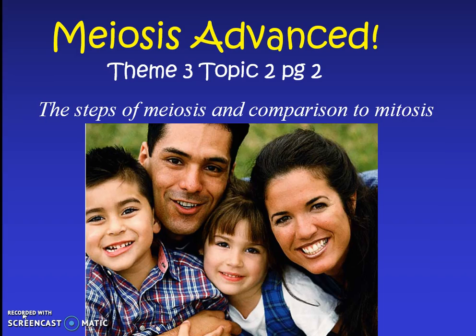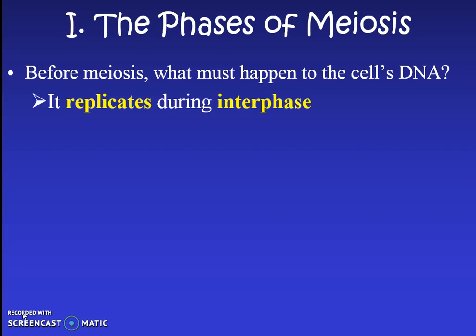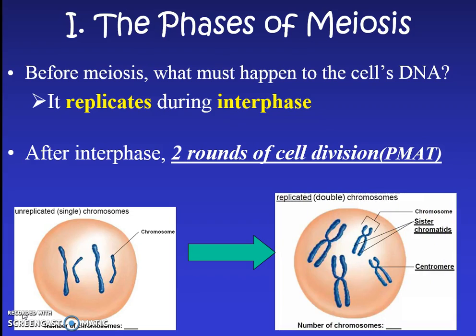Don't forget all those new words we learned last time. We're going to start by looking at the steps or the phases of meiosis. Before we do that, let's realize that before meiosis occurs, what must happen to the cell's DNA? This is going to be a lot like mitosis - the cell's DNA needs to replicate, and we know DNA synthesis or replication happens during interphase. After interphase, we're going to have meiosis, but meiosis is different than mitosis.